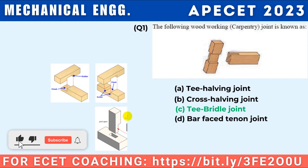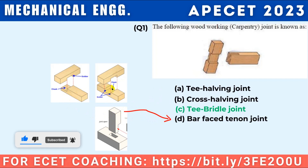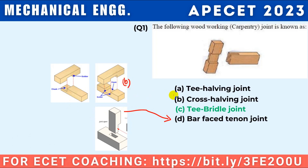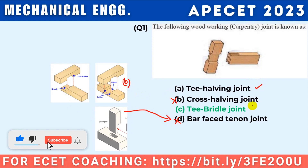What are the two types of joints? Tenon joint and mortise joint. This is a tenon joint. We will choose the two — halving joint. This is cross halving. We will be able to figure out these types of joints.